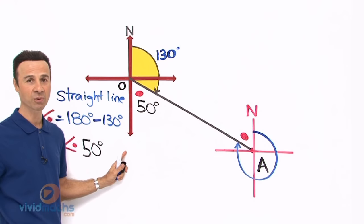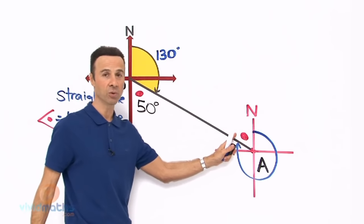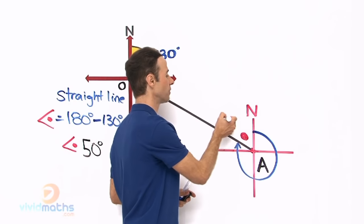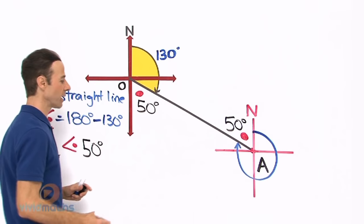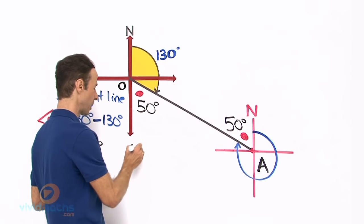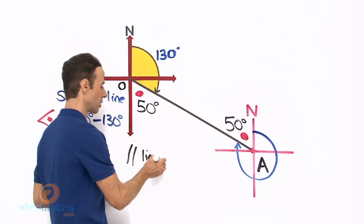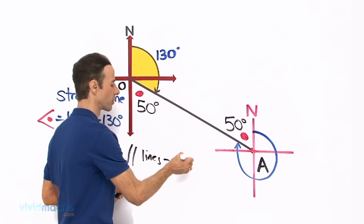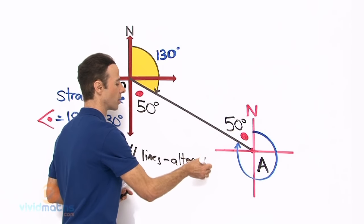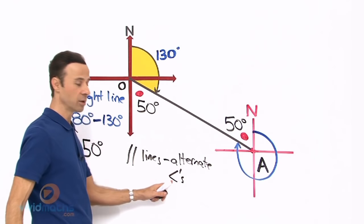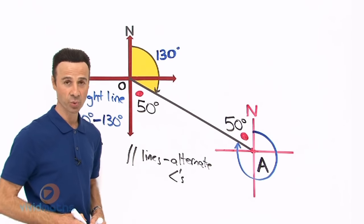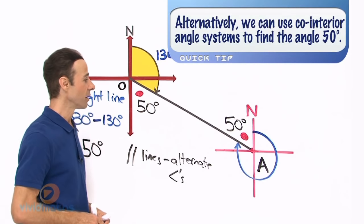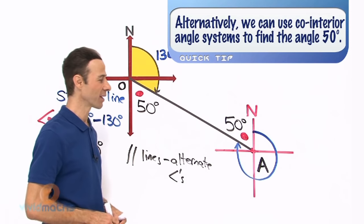OK, let me mark that in the diagram: 50 degrees. Now if it is 50 degrees here, it is also going to be 50 degrees right over here, also, because alternate angles are equal. OK, due to alternate angles, so parallel lines yields alternate angles.